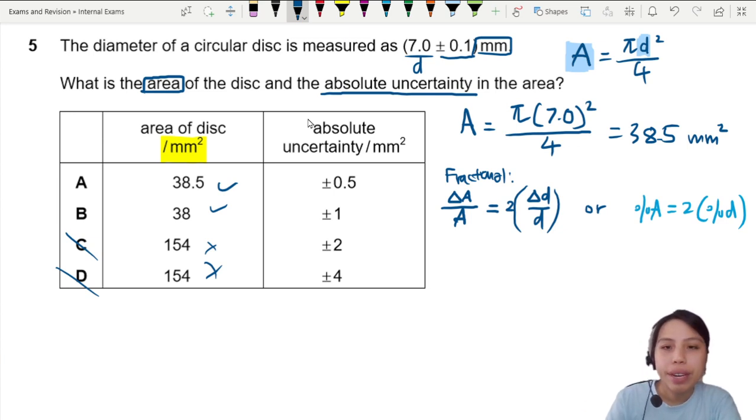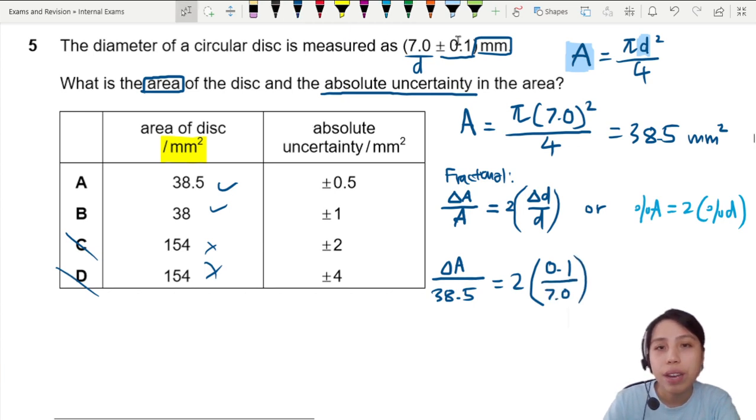Now we plug in the values. So uncertainty in A is what we want to find. A we just put here 38.5, 2 times the fractional uncertainty of diameter. So 0.1 divided by 7.0. That's from this value they give us.